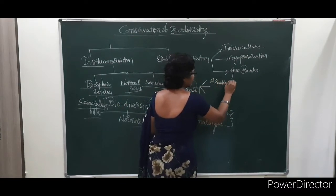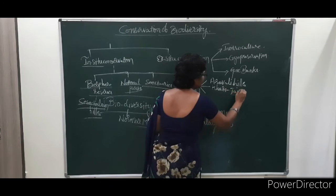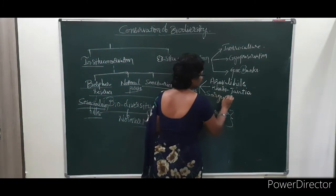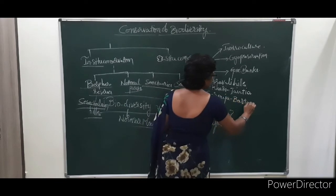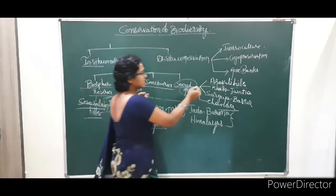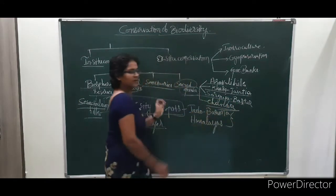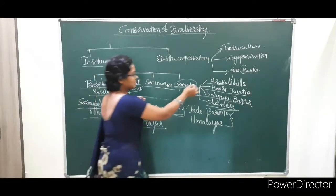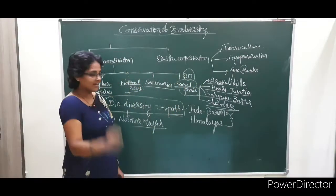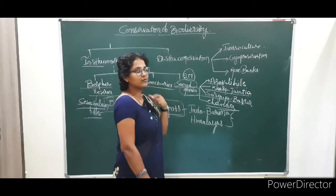Sacred groves are located in different areas such as Aravalli Hills, Khasi Jainthiya Hills in Meghalaya, Sarguja Bastar, and Chanda. These sacred grove locations are very important. National parks, biosphere reserves, sanctuaries, and sacred groves all come under in-situ conservation.